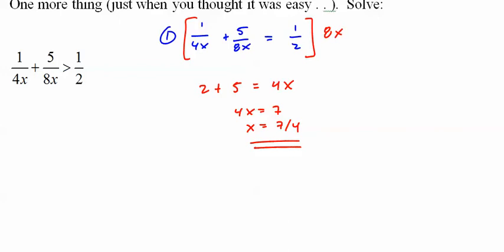Step 2: set both the bottoms equal to 0. In this case I only have to do it once. 8x equals 0, x equals 0.